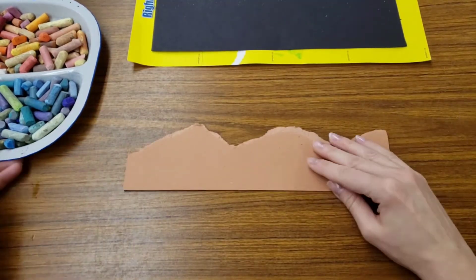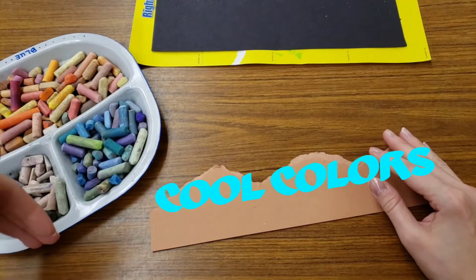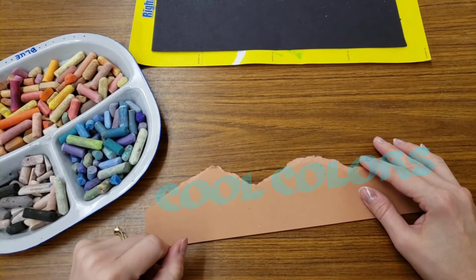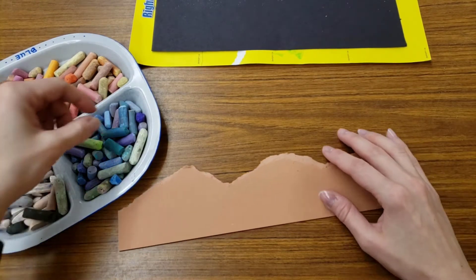Take one of those pieces, and we're going to use the cool colors in your chalk tray. The cool colors would be blues, greens, and purples, and they're all together right here.